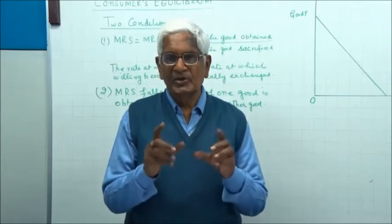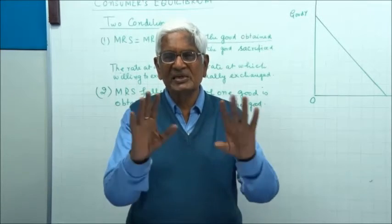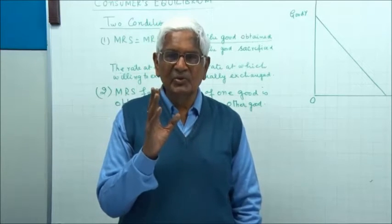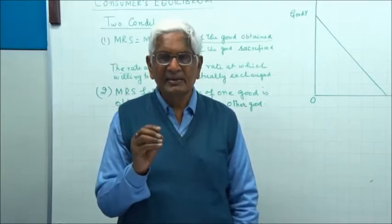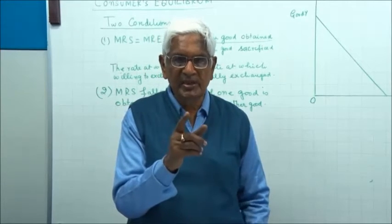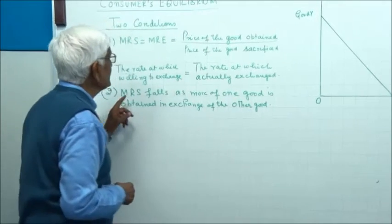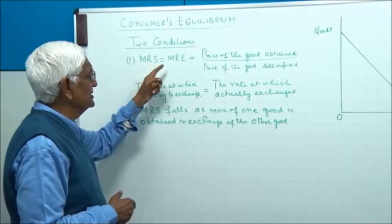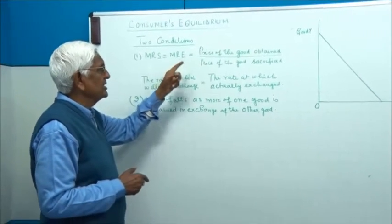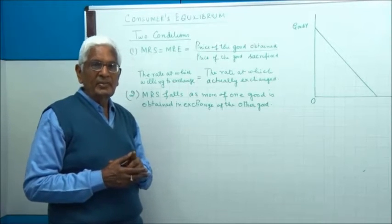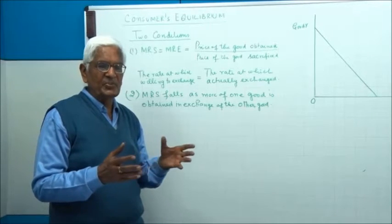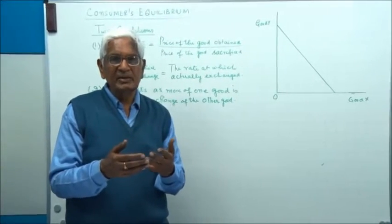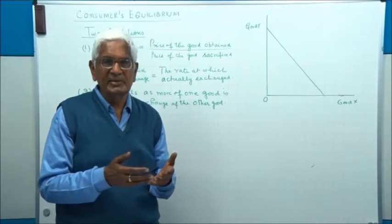There are two conditions of consumer's equilibrium. Condition one: marginal rate of substitution is equal to the market rate of exchange. We normally express this as PX upon PY, on the assumption that X is represented on the x-axis and Y is represented on the y-axis.